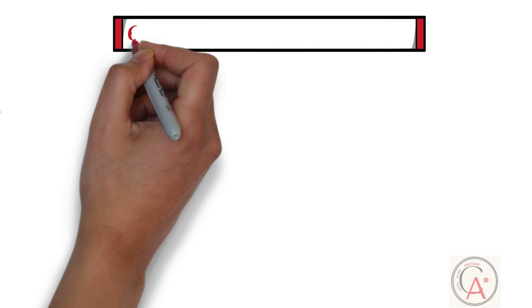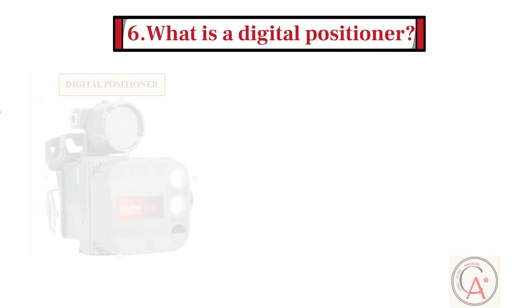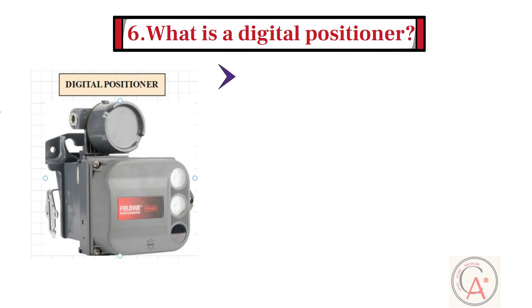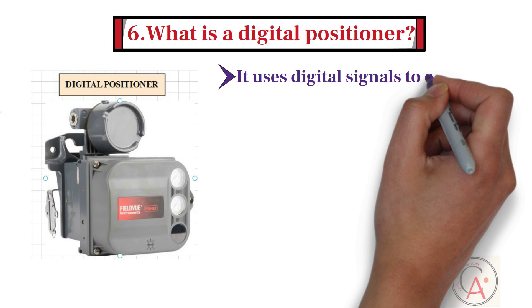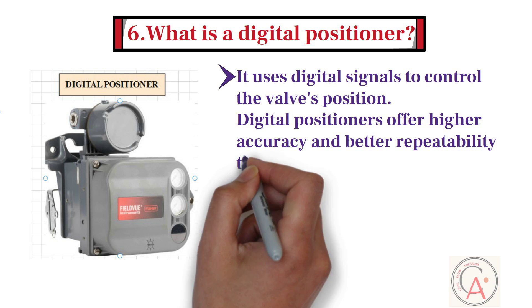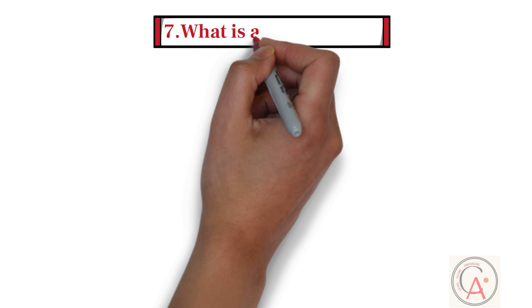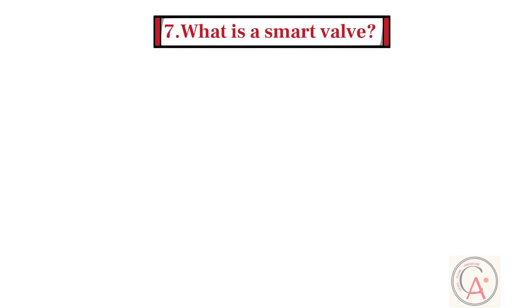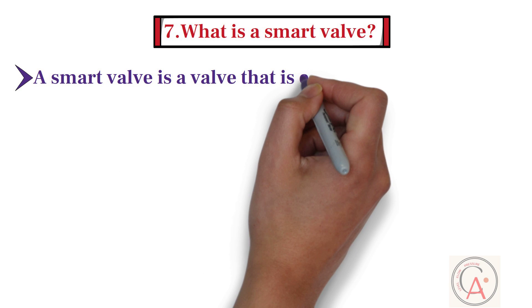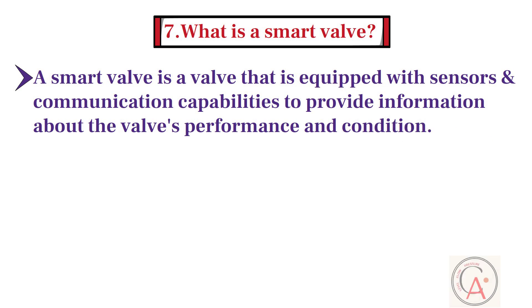Sixth question: what is a digital positioner? A digital positioner is a type of positioner that uses digital signals to control the valve's position. Digital positioners offer higher accuracy and better repeatability than analog positioners. Seventh question: what is a smart valve? A smart valve is a valve equipped with sensors and communication capabilities to provide information about the valve's performance and condition.